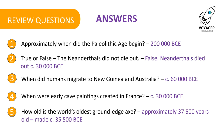Welcome back. Here are the answers to our review questions. Number 1: Approximately when did the Paleolithic Age begin? 200,000 BCE. 2: True or false, the Neanderthals did not die out? This is false. The Neanderthals did die out around 30,000 BCE. 3: When did humans migrate to New Guinea and Australia? Around 60,000 BCE. 4: When were early cave paintings created in France? Around 30,000 BCE. 5: How old is the world's oldest ground-edge axe? Approximately 37,500 years old, made around 35,500 BCE.